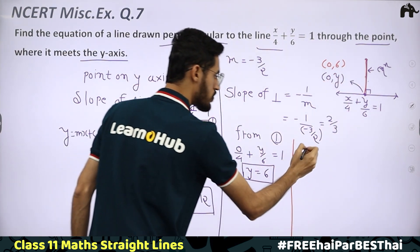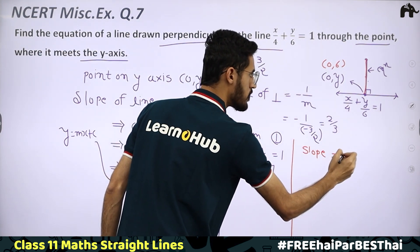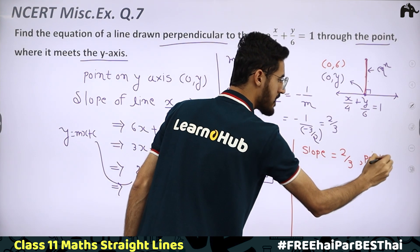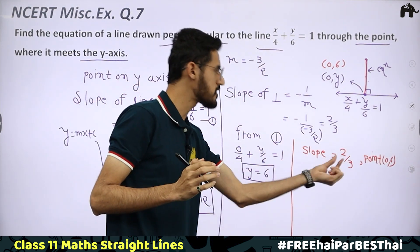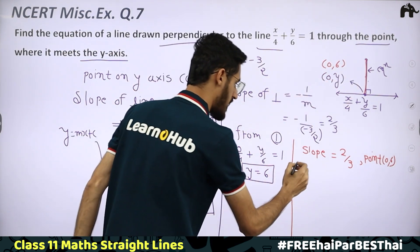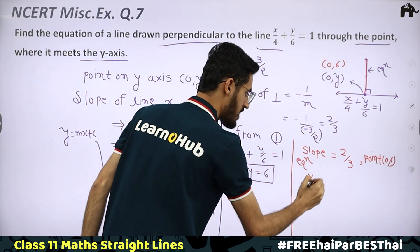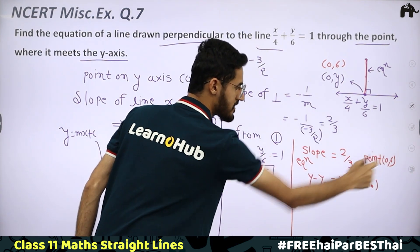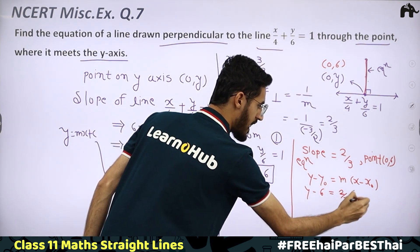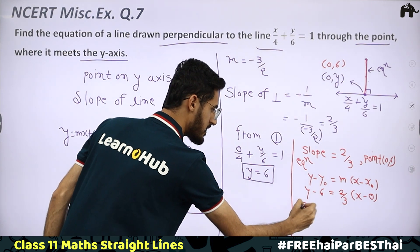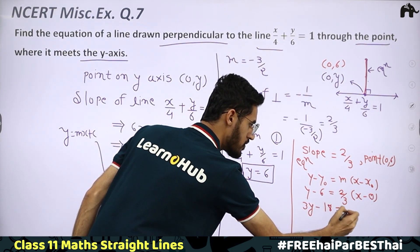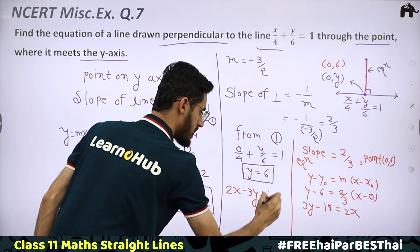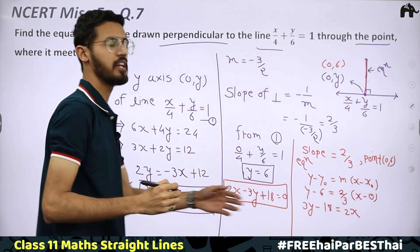Using point-slope form: y − y₀ = m(x − x₀), we get y − 6 = (2/3)(x − 0), which gives 3y − 18 = 2x. Rearranging: 2x − 3y + 18 = 0. This is the equation of the required perpendicular line.